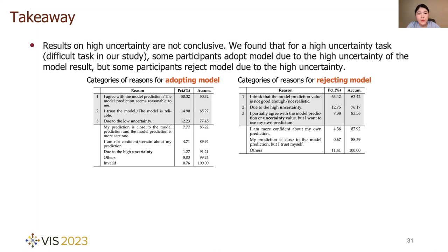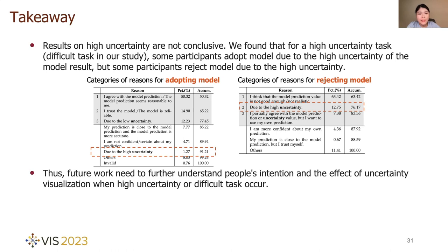We also observed that for high uncertainty tasks, which are difficult tasks in our study, some participants adopt model due to the high uncertainty of the model result, but some people reject model due to the high uncertainty. Thus, future work need to further understand people's intention and the effect of uncertainty visualization when high uncertainty or difficult tasks occur.